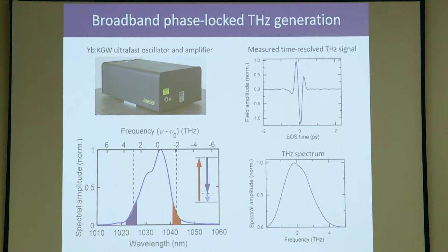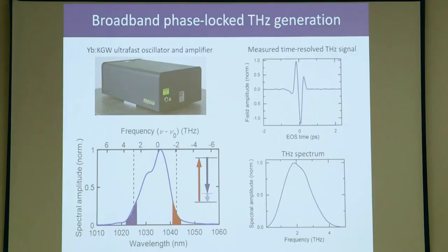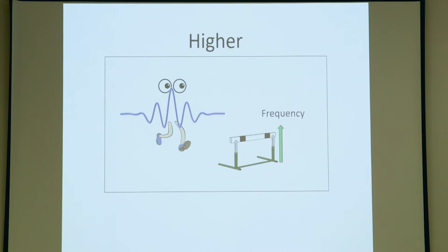We send it into our terahertz scheme. This is a time resolved signal. If I do the Fourier transform, I get the terahertz spectrum. As predicted, it cuts around four terahertz. This is still great. There's a lot of experiments you can do with this spectrum. However, it is also the spectrum that a lot of people can generate in their lab. It's kind of hard to be original. It would be nice if we could generate higher frequencies to explore new effects in materials. It would also be nice to get more information about the materials you're probing. But to get to these higher frequencies, I would need an initial near-infrared spectrum which is broader.